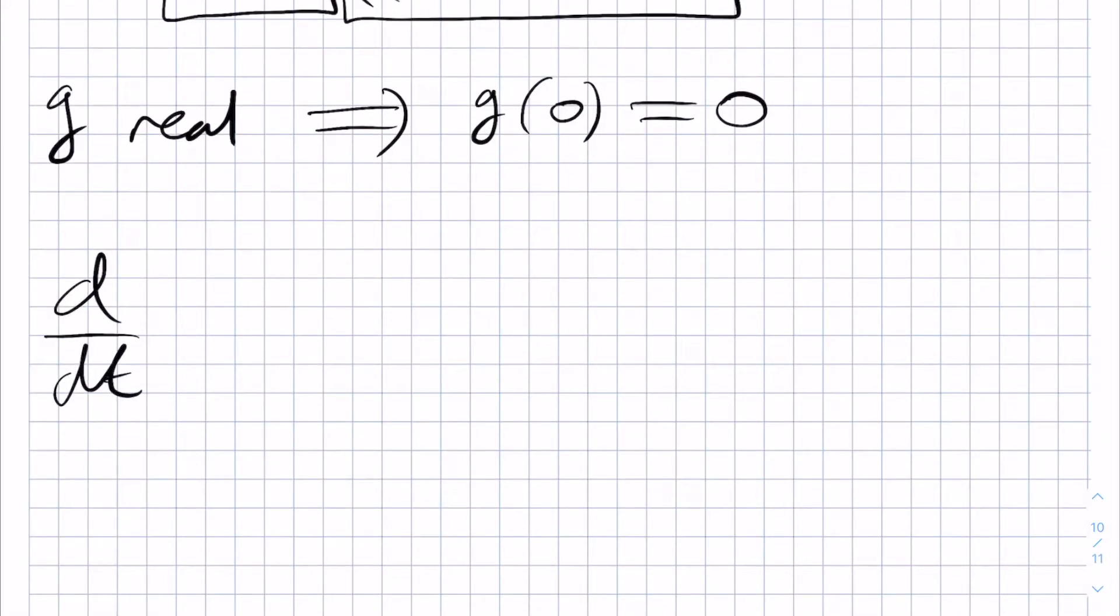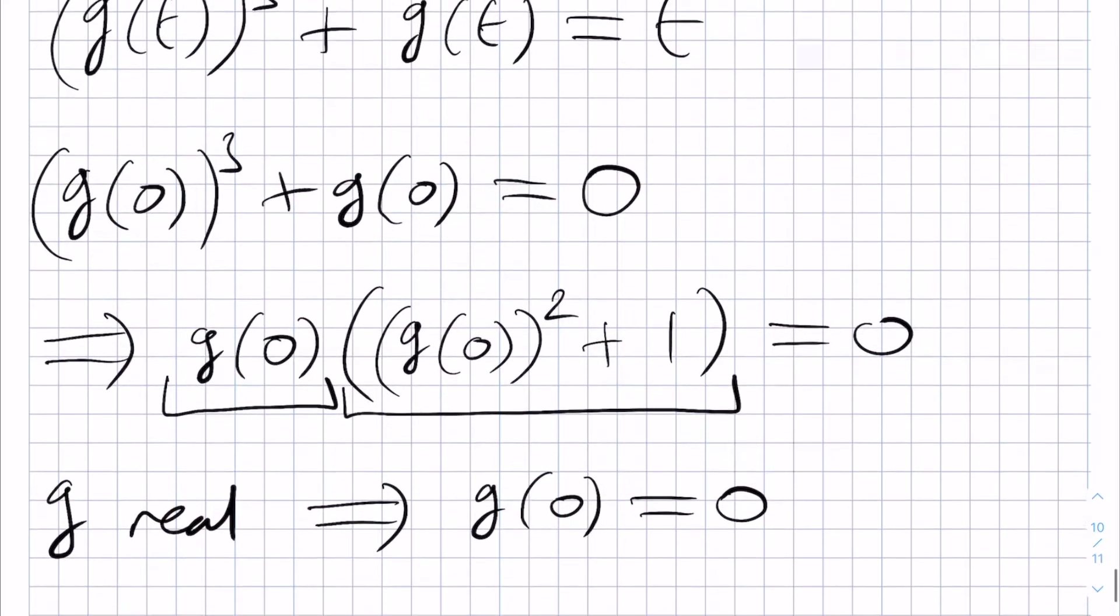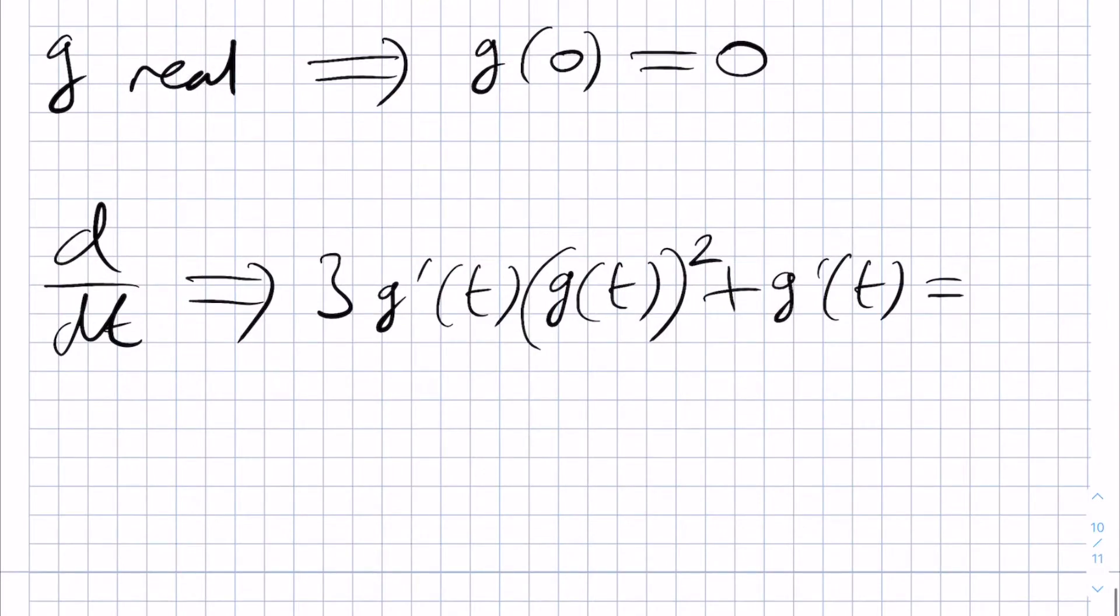then we get 3g prime of t g(t) squared plus g prime of t is equal to the right-hand side, which is 1.